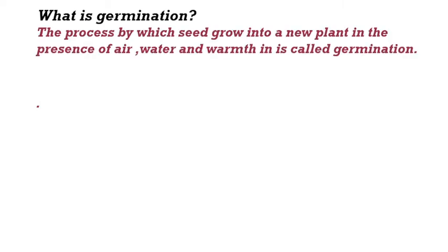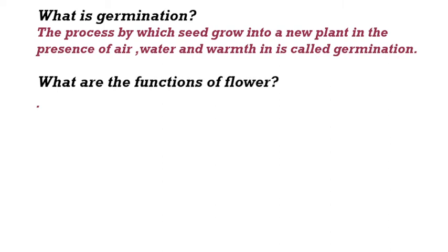What is germination? The process by which a seed grows into a new plant in the presence of air, water, and warmth is called germination. (Wo prakriya jiske dwara beej hawa, paani aur garmahat ki upasthiti mein ek naye paudhe ke roop mein viksit hota hai, use ankuran kehte hain.) What are the functions of flower? A flower grows into a fruit. (Phool se phal banta hai.)